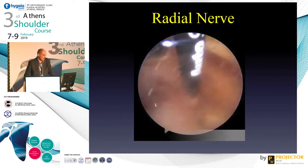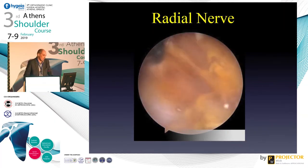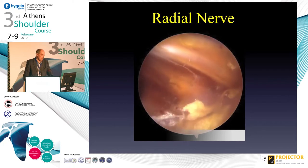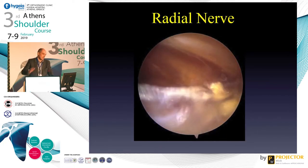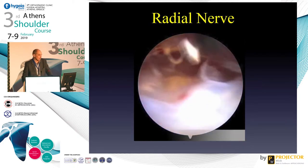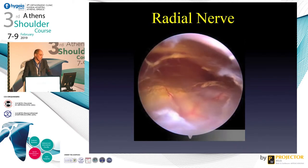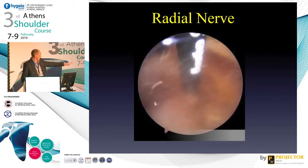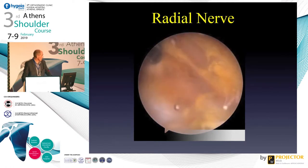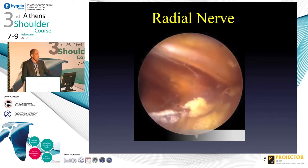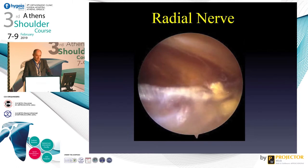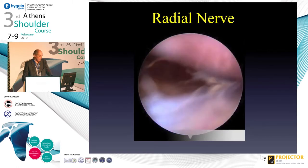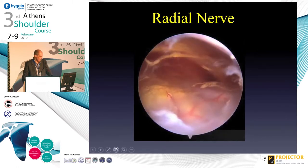Under the conjoint tendon you can see what is white - this is the radial nerve. It is in fact very anterior, and the lat dorsi is more posterior. The white surface is posterior, so you just lift up the radial nerve and you will see the lat dorsi posteriorly.